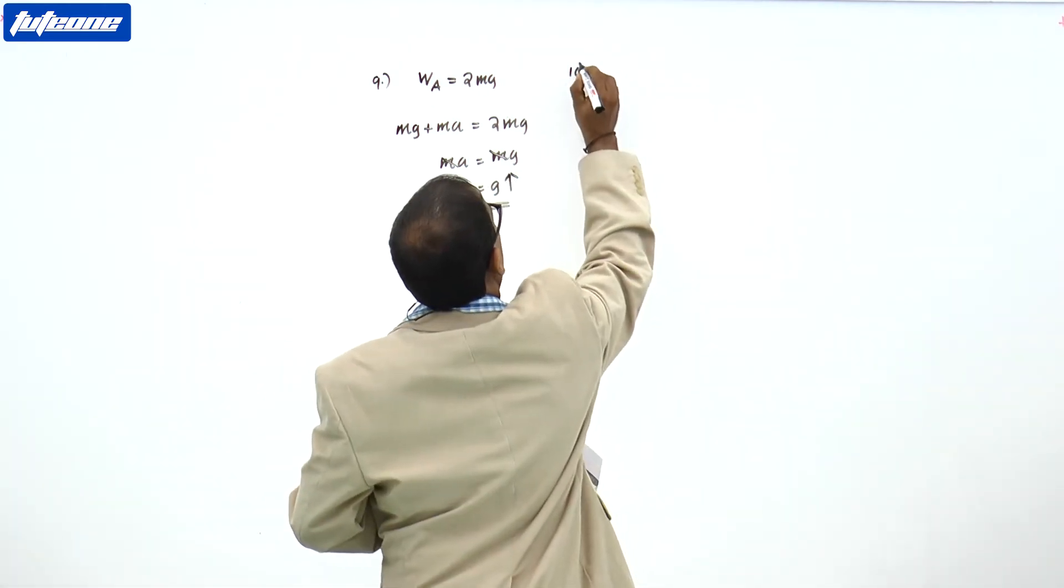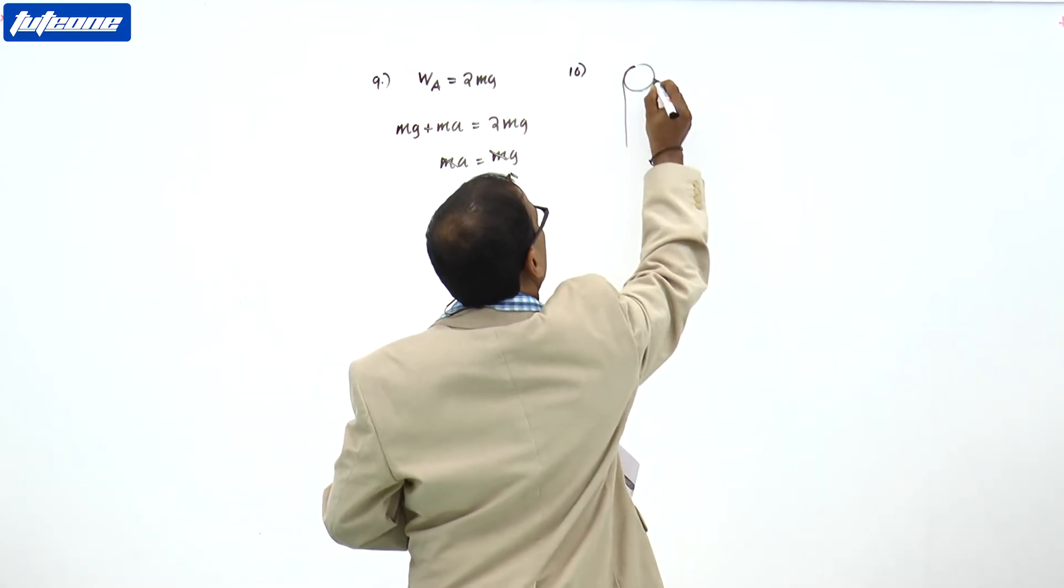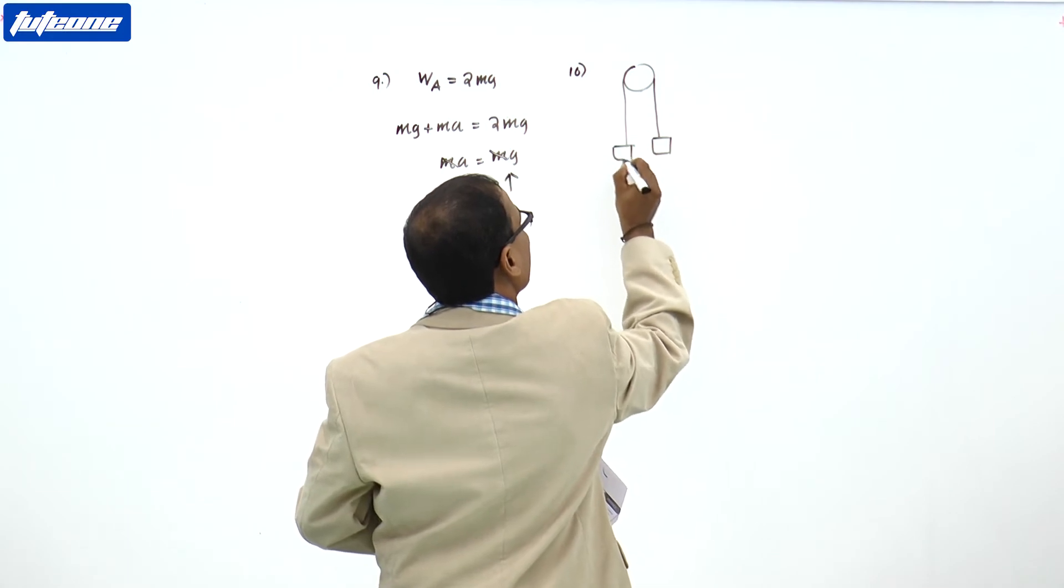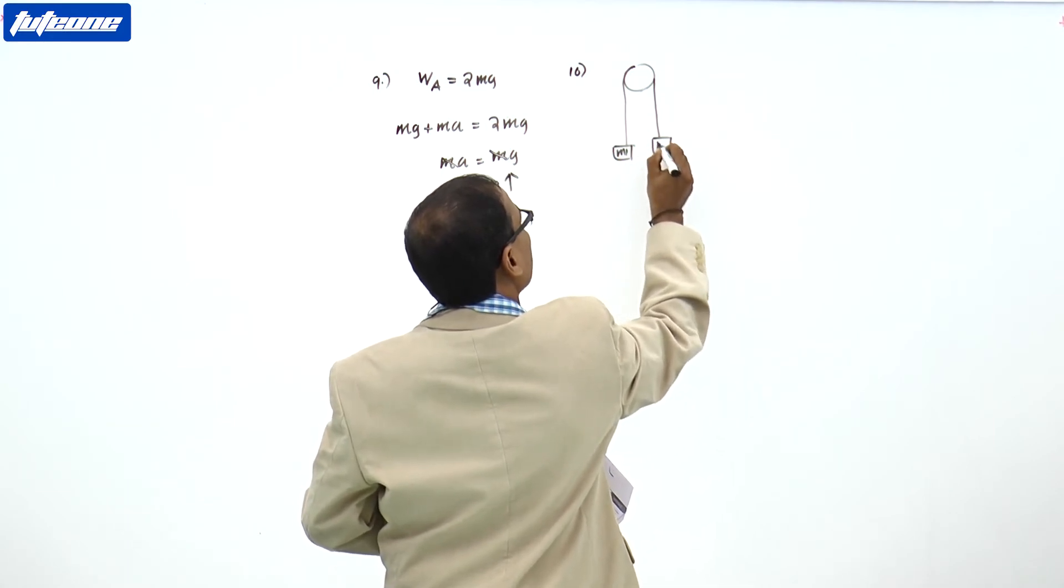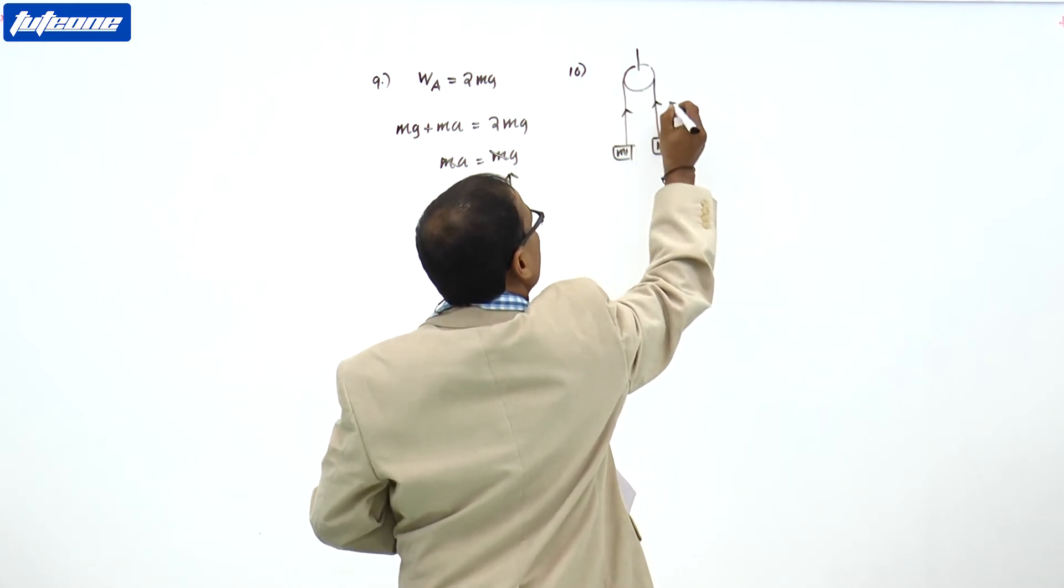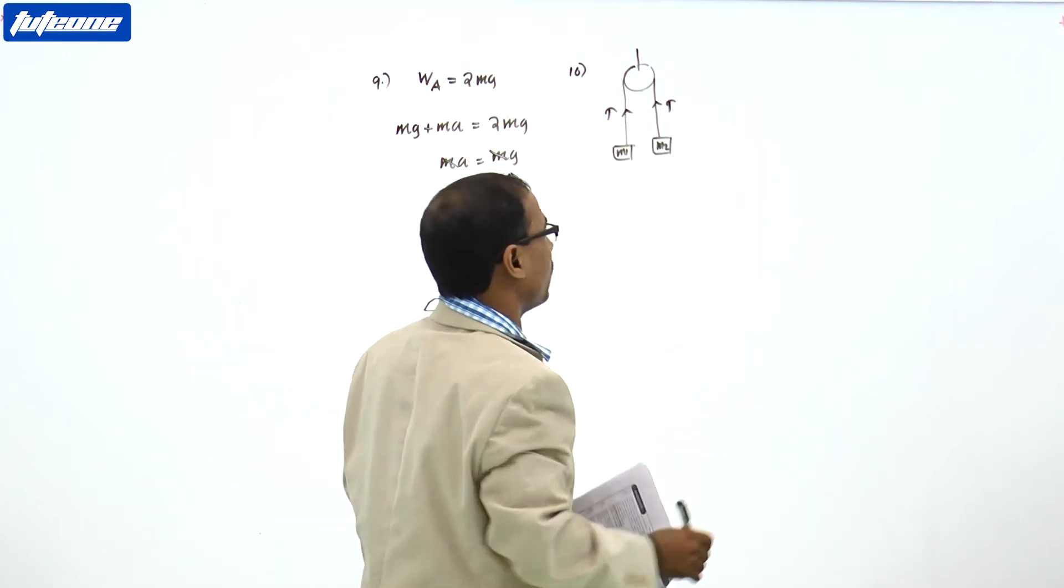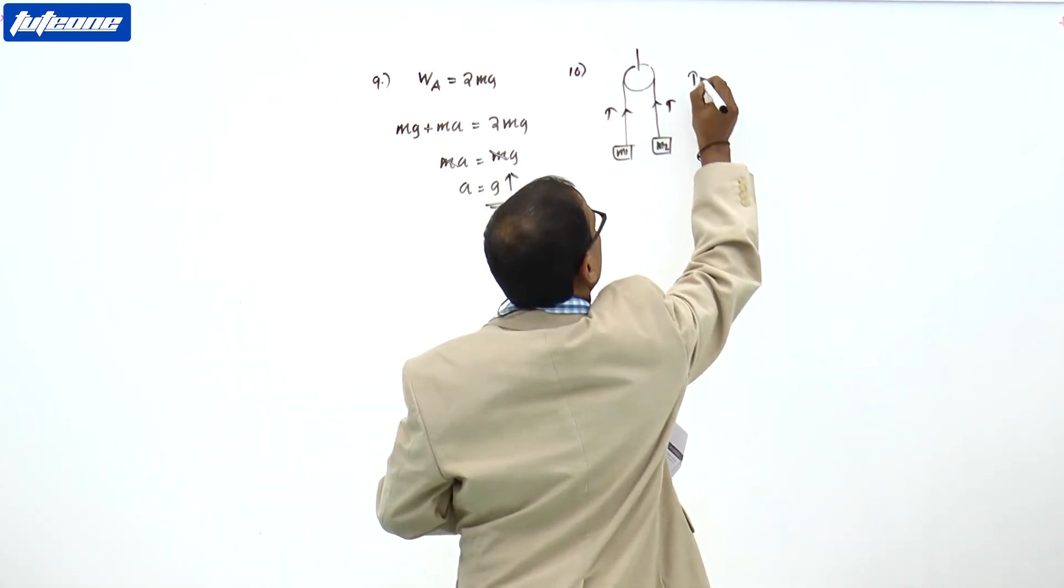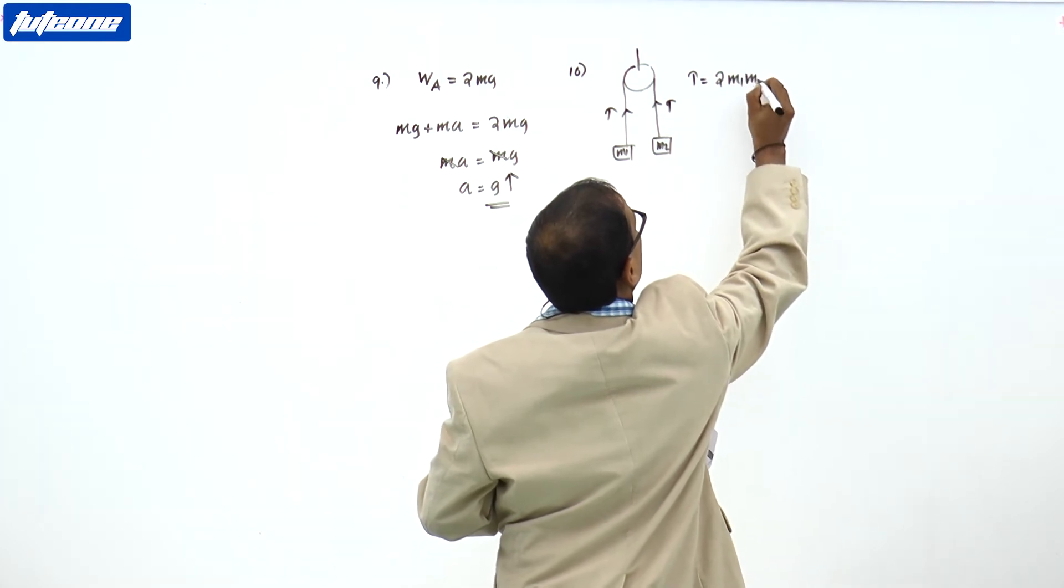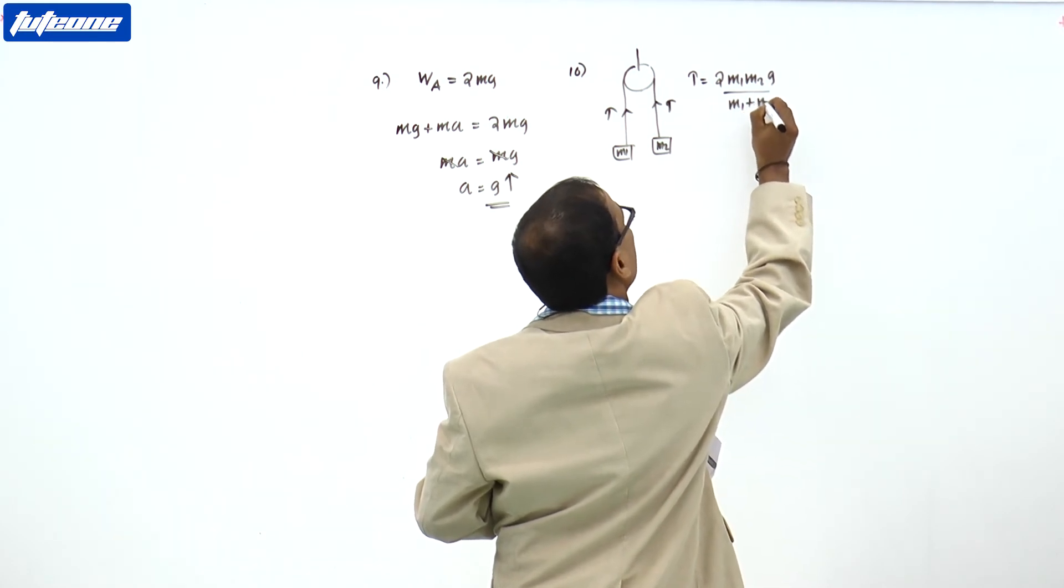In this question, we have already discussed that when two bodies M1 and M2 are connected over a frictionless pulley, the string has a common tension T and its value is equal to 2M1M2G divided by M1 plus M2.